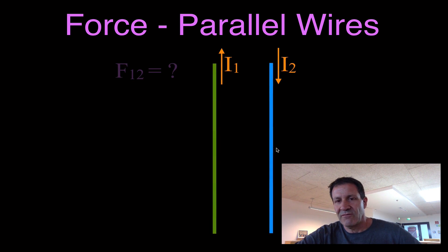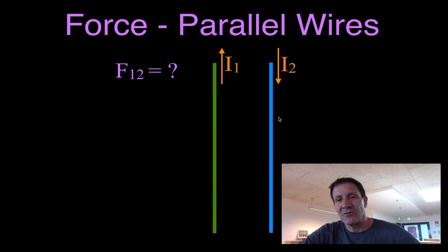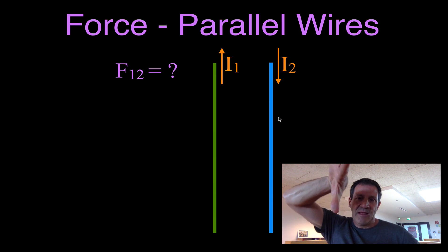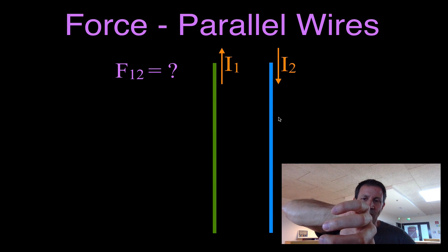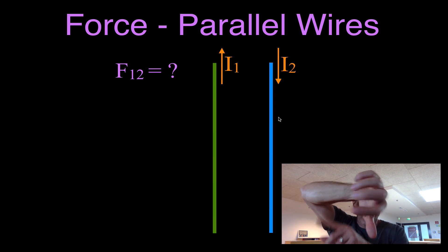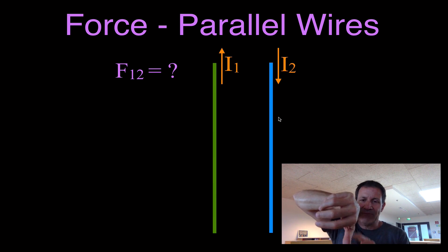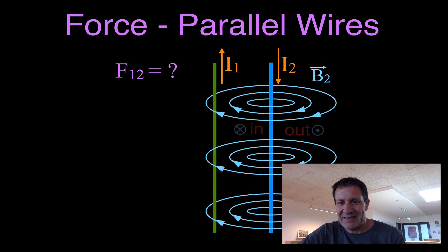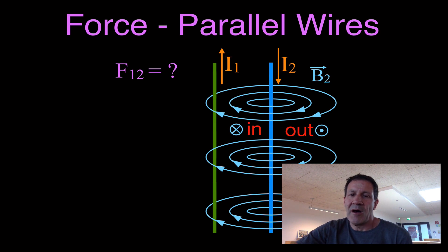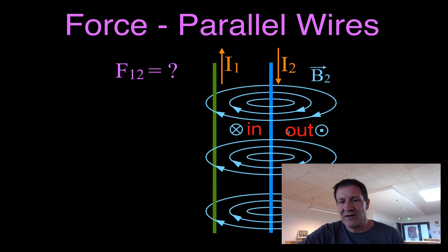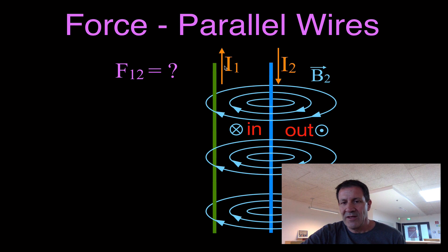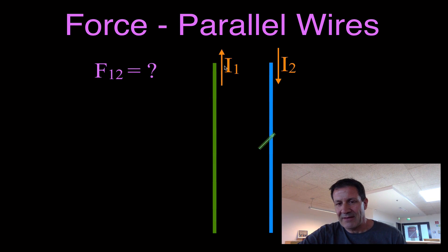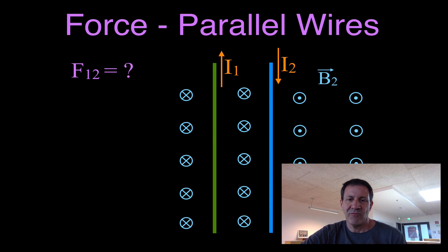Now we can also determine the direction of the force on wire one from wire two. Wire two has a current flowing downward. We reach in and grab that wire, and on the right-hand side the magnetic field is coming out of the screen, while on the left-hand side it's moving into the screen. That means wire number one is completely surrounded by a magnetic field from wire two that's moving into the screen.